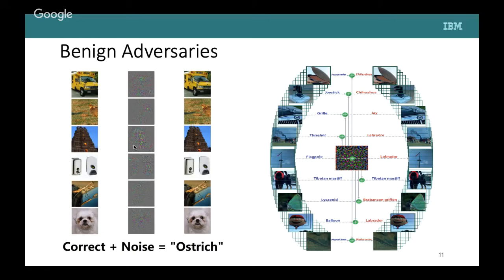A targeted attack can make an entire set of different images — such as cool bars, a temple, and others — all get classified as ostrich by computing the appropriate noise gradient for each image. In a universal non-targeted attack, a single distortion causes a face powder to be classified as a chihuahua, a joystick as a dog, and a grill image as a jaybird. This can collapse a model that achieved 90% accuracy on a benchmark the moment it is deployed.